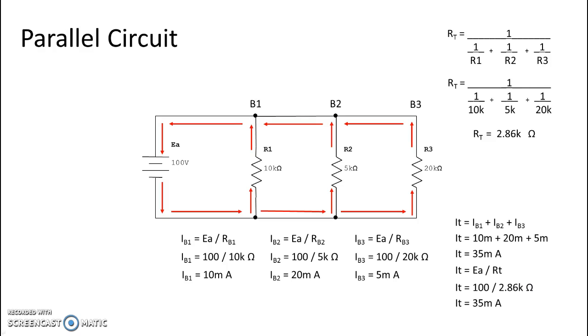So one last thing to remember on parallel circuits is that although they are current dividers, voltage is constant in a parallel. So that means that the voltage applied is the same voltage that you see on branch one, branch two, and branch three.